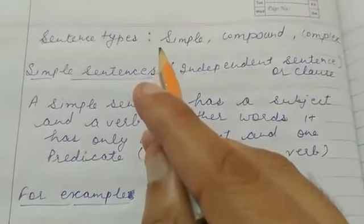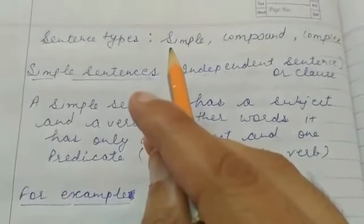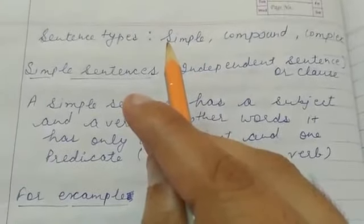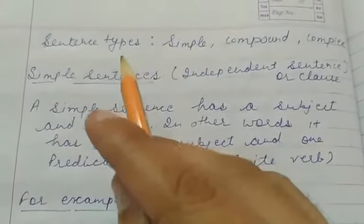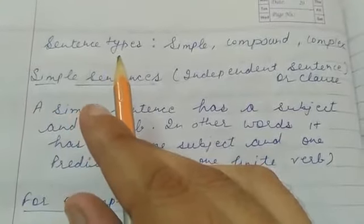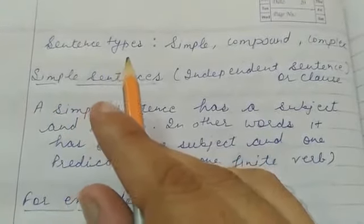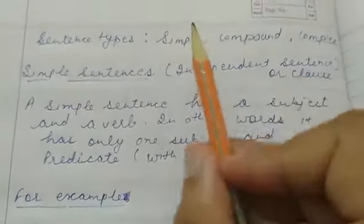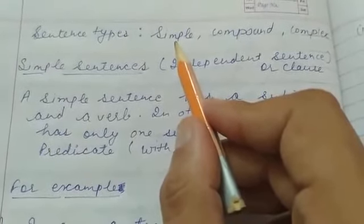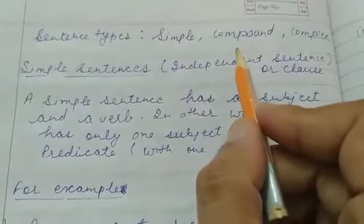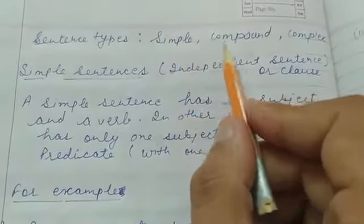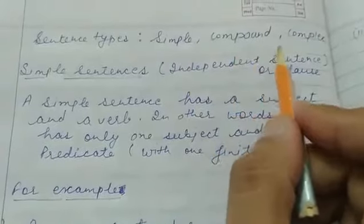Hello dear students, I am Paramjit, your English teacher. Welcome again to my YouTube channel. Today we are going to discuss sentence types on the basis of structure. We have three types, but in today's lecture we will just discuss simple and compound. The three types overall are simple, compound, and complex.